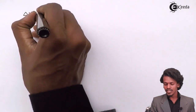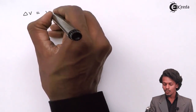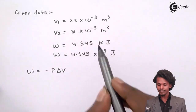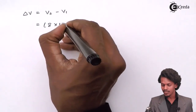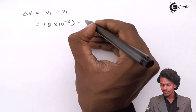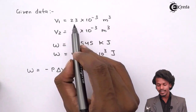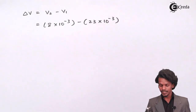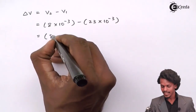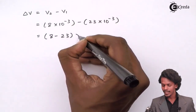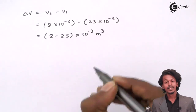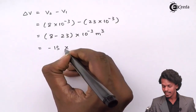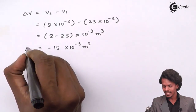The change in volume ΔV = V2 - V1 = 8 x 10⁻³ m³ minus 23 x 10⁻³ m³, which gives ΔV = -15 x 10⁻³ m³.